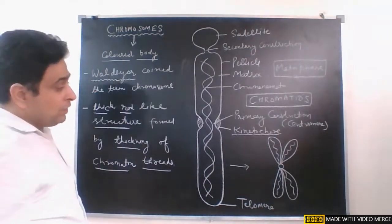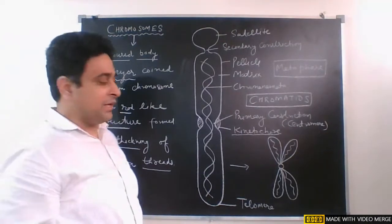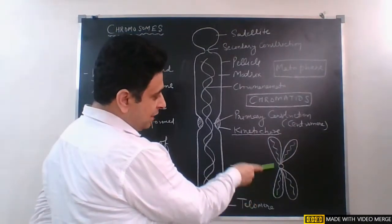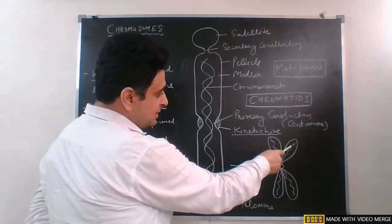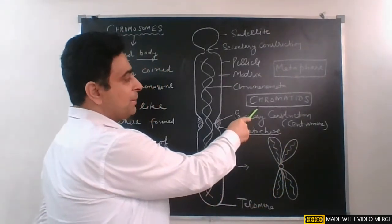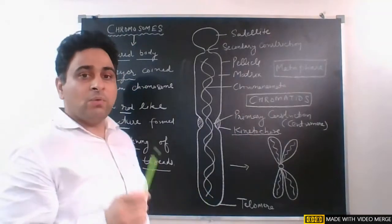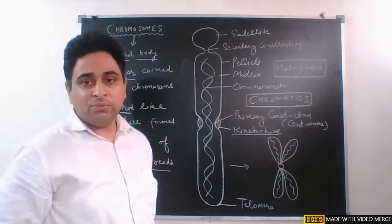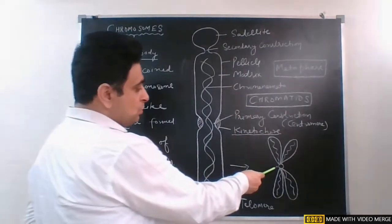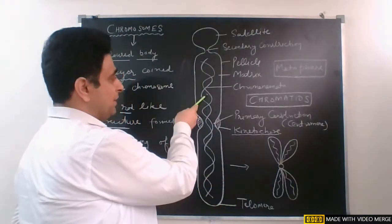Now if we see the structure of a mature chromosome, it has two identical halves, and these two halves are called chromatids. A mature chromosome has one pair of chromatids. Before turning into a mature chromosome, it has a single chromatid.